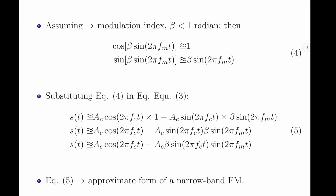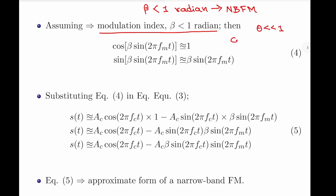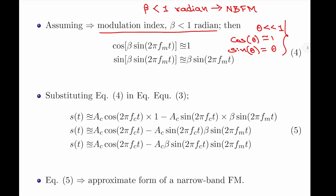I would like to recall an important point from the previous video: if the modulation index β is less than 1 radian, then the frequency modulation created is called narrow band frequency modulation. Since we are discussing narrow band FM, let β be less than 1 radian. We recall the trigonometric property that when θ is very much less than 1, cos(θ) ≈ 1 and sin(θ) ≈ θ. So cos(β·sin(2π·fm·t)) ≈ 1 and sin(β·sin(2π·fm·t)) ≈ β·sin(2π·fm·t).